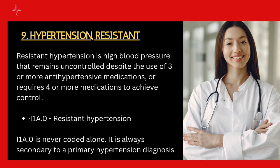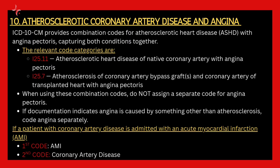Resistant hypertension is high blood pressure that remains uncontrolled despite the use of three or more hypertensive medications, or requires four or more medications to achieve control. For resistant hypertension, you assign I1A.0. This will always be a secondary code — the primary code should be for the hypertension itself.